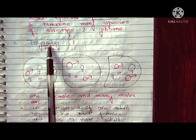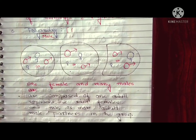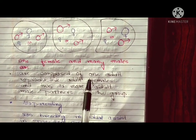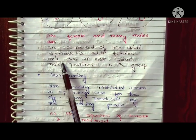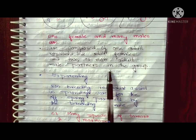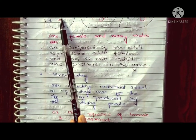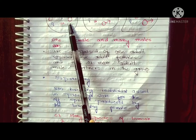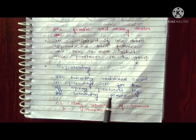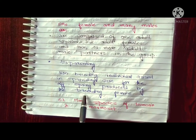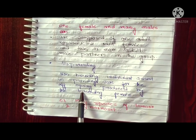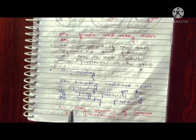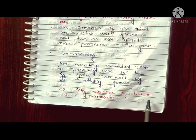Next is polyandry. Polyandry refers to one reproductive adult female with two or more adult male partners in the group. Males contribute to parental care, and alloparenting also occurs, meaning individuals other than the parents help care for the offspring. Examples of polyandry are tamarins and marmosets.